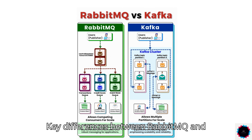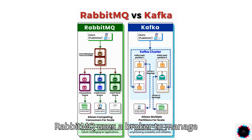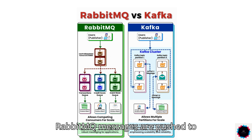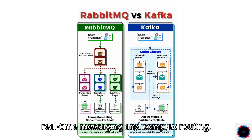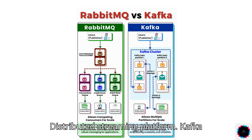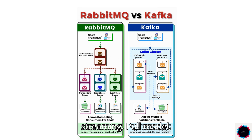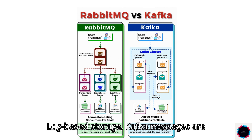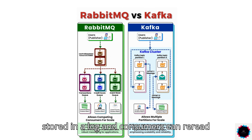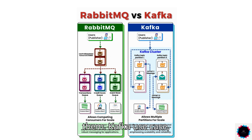Key Differences Between RabbitMQ and Kafka. RabbitMQ uses a broker to manage message queues and operates on a push model where messages are pushed to consumers, with message acknowledgement ensuring messages are not lost. It is good for real-time messaging and complex routing. Kafka, by contrast, is a distributed streaming platform designed for large-scale message streaming, using a pull model where consumers pull messages as needed, with log-based storage allowing consumers to re-read messages. Kafka is ideal for big data applications and high-throughput messaging.